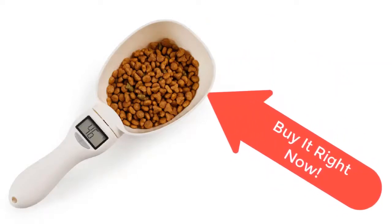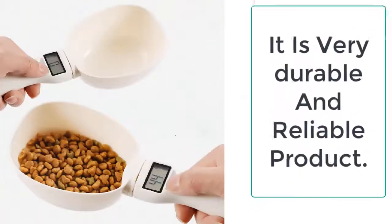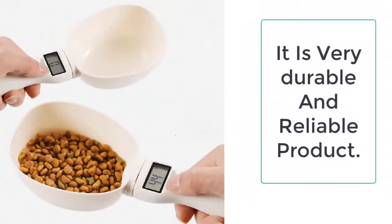To measure different products, use different units. All you have to do is change the measuring units by simply pressing the unit button on the dog food measuring cup.